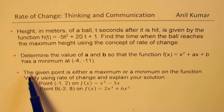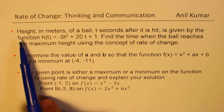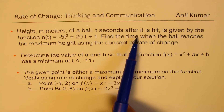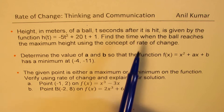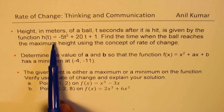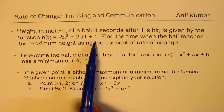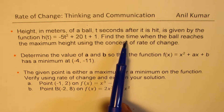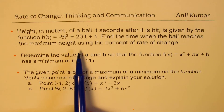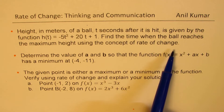We have three questions. The first one is: the height in meters of a ball t seconds after it is hit is given by the function h of t equals minus 5t squared plus 20t plus 1. Find the time when the ball reaches the maximum height using the concept of rate of change.